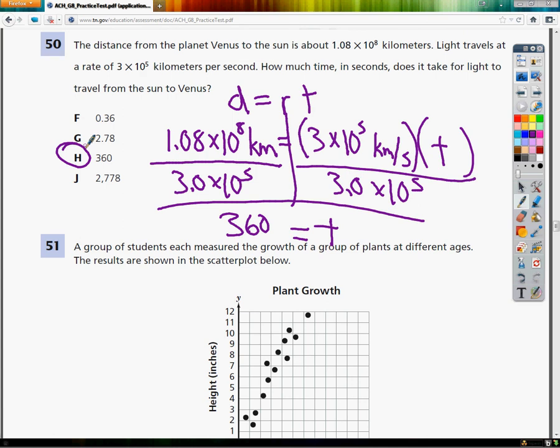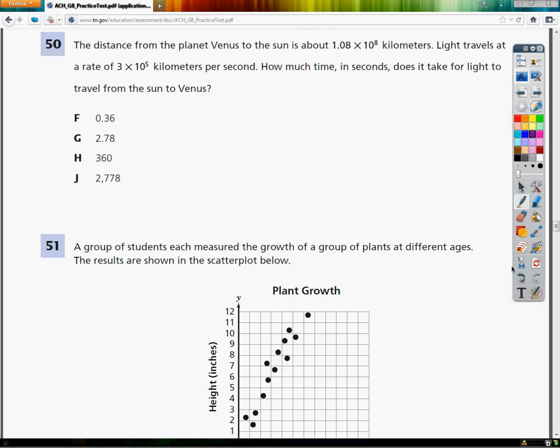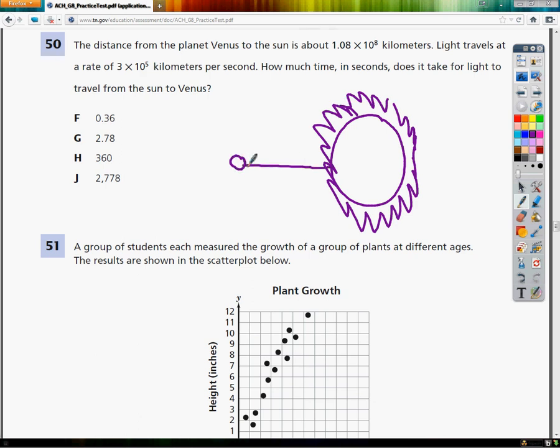Well, you can think about this logically and still get the right answer if you just think about what the question says. It says the distance from planet Venus to the Sun. So here we've got the Sun. It looks like a terrible lion, doesn't it? And then I've got some little planet Venus here. Now, the distance is 1.08 times 10 to the 8th kilometers.